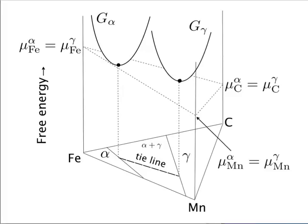Because we have a third component we have an extra degree of freedom, and you can have a series of tie lines defining equilibrium between alpha and gamma at a constant temperature. This is a ternary section of the phase diagram - at the bottom is a ternary section where we have an alpha phase field, a gamma phase field, and an alpha plus gamma phase field at constant temperature. You have a tangent plane - like two footballs - you can rock that tangent plane and still maintain contact, so you no longer have just one tie line as in the binary, but a choice of many tie lines and still maintain equilibrium at the interface.